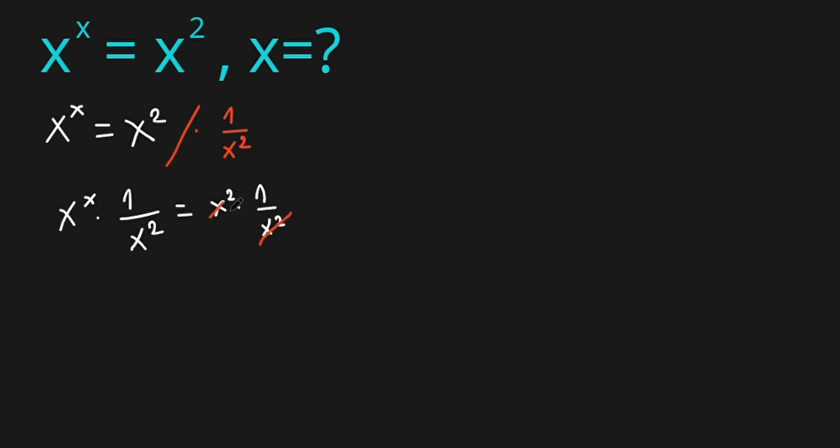Let's eliminate this. Now x to the power of x over x squared equals 1. And now we have x to the power of x minus 2 equals 1.